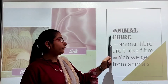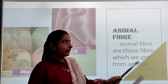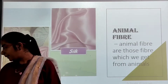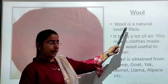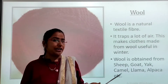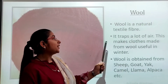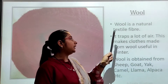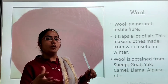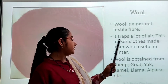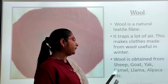Then we have animal fibers. Animal fibers are those fibers which we get from animals. Now, wool. Wool is a natural textile fiber — we get it naturally without any chemical treatment. It traps a lot of air, which makes clothes made from wool useful in winter season. Wool is obtained from sheep, goat, yak, camel, llama, and alpaca.